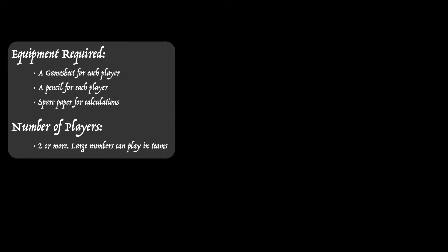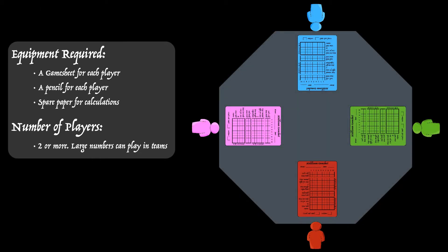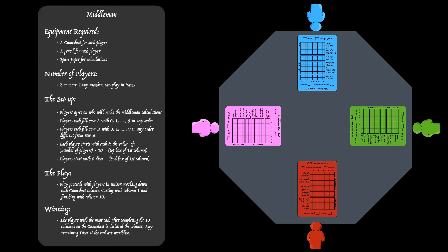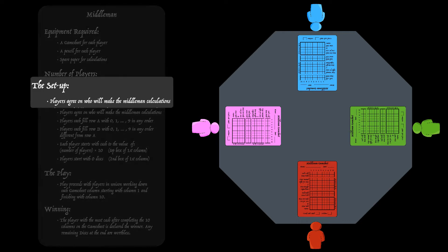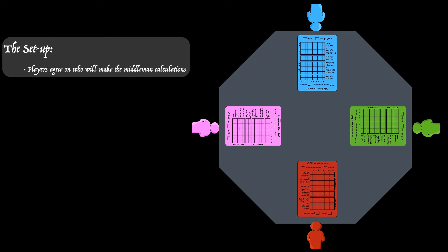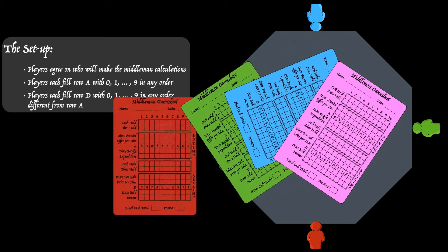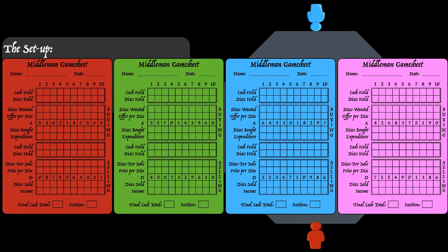What do you need? You'll need a game sheet for each player. Each player should have a pencil and spare paper for calculations. The game works with any number of players, two upwards. I'll be illustrating the game with four players. Here's the setup: players agree who will make the middleman calculations. First of all, players fill up row A and row D — numbers zero up to nine in any old order. Make sure row D is different from row A.